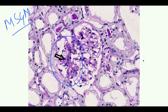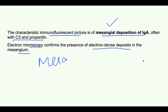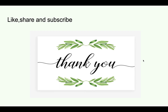On immunofluorescence, you can see deposition of IgA and deposition of C3 and properdin, because there is activation of the alternative complement pathway. Both deposits can be seen. On electron microscopy, you will see electron-dense deposits in the mesangium — the mesangium contains IgA, and therefore the electron-dense deposits will also be seen in the mesangium itself.